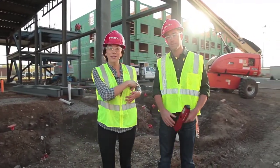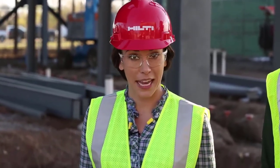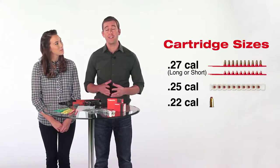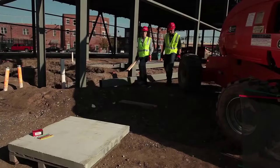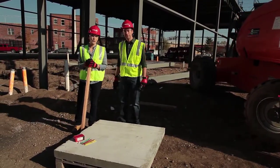Now it's time to choose a power level or cartridge color. The most common cartridge colors are green (lightest), yellow (medium), and red (heavy). We also have blue, black, and brown for more specific applications. Cartridges are available as .27 long or short, .25 or .22 caliber. The harder the base material and the longer the nail, the more power needed. Usually green or yellow will provide ample driving power for 90% of applications. If unsure, start light and work your way up. Perform a test fire to ensure you've selected the right cartridge color or power level.